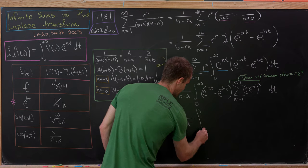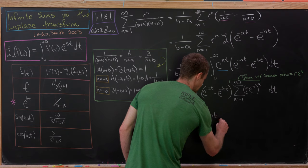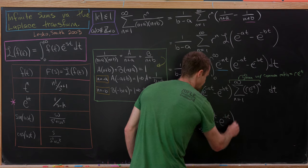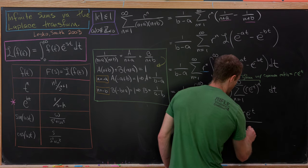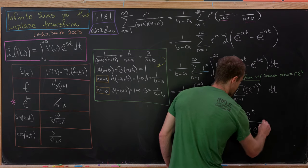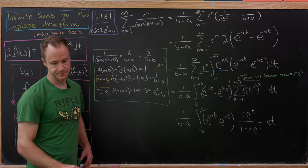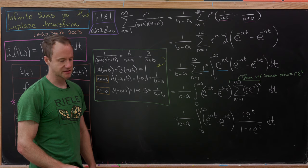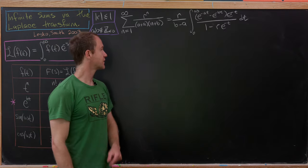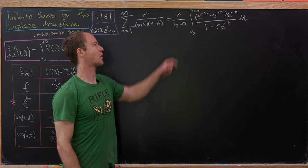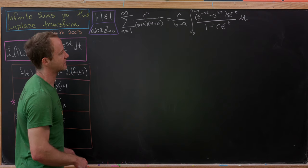Evaluating the geometric series gives us the integral from 0 to infinity of (e to the minus at minus e to the minus bt) times r e to the minus t over (1 minus r e to the minus t) dt. Now we'd like to do a change of variables. We see an e to the minus t in the denominator and its derivative in the numerator, which motivates setting x equal to e to the minus t.